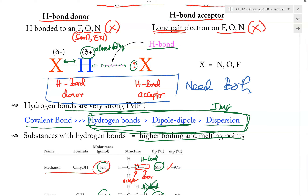It is possible for two different molecules to make Hydrogen bonds to each other. If one molecule has the donor part and a different molecule of a different substance has the acceptor, they will be able to make H-bond to each other. So as long as we have one donor from one molecule and the acceptor from another molecule, they will be able to make H-bonding.